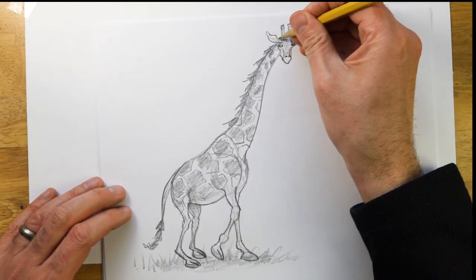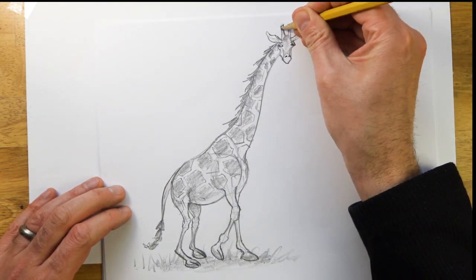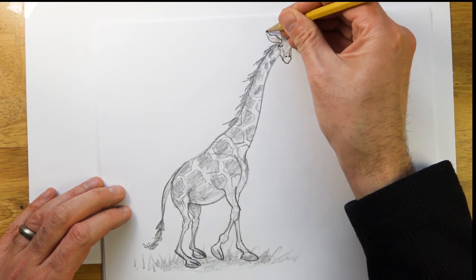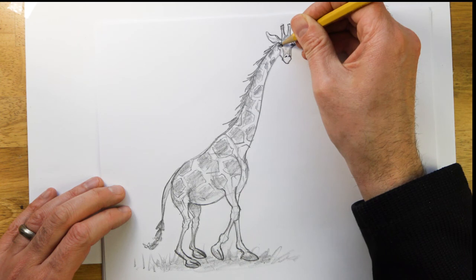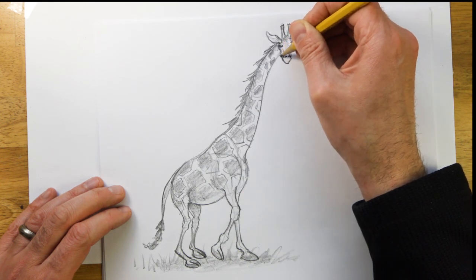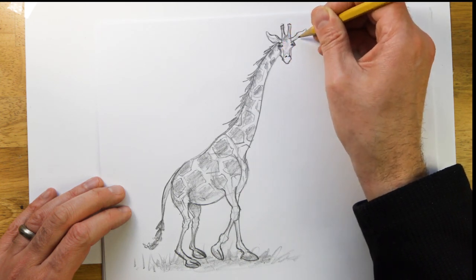And just want to darken it in just a few parts. Nice and light, quick lines. Quick lines are great. It just keeps it a little more fresh, less controlled.